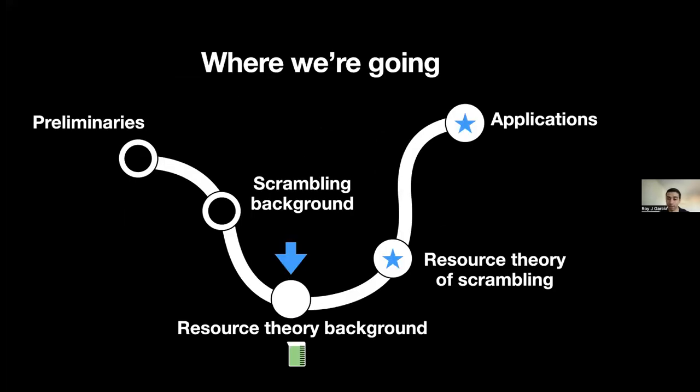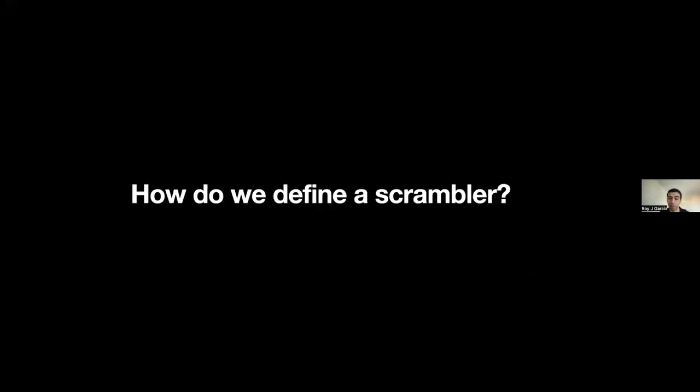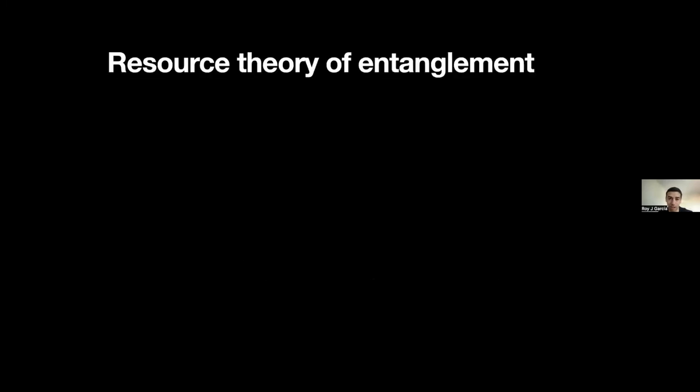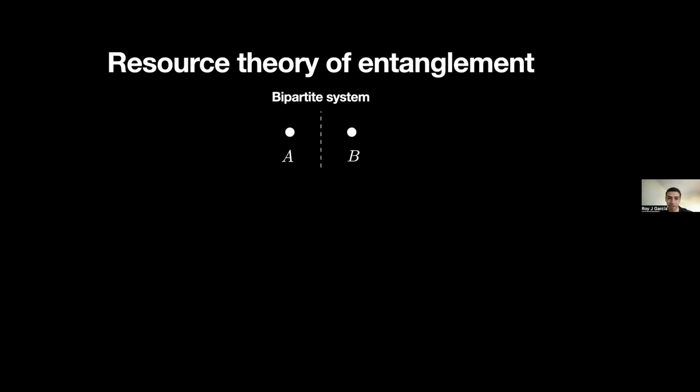Now I'm going to introduce something called resource theory. To motivate this section: how is it that we can define a scrambler? Earlier I gave a description of what a scrambling unitary did, but I didn't give a formal definition. To write down that definition we have to look at resource theory. Before explaining what a resource theory is, I'll give you an example you're already familiar with: the resource theory of entanglement. Consider a bipartite system with qubit A on the left and qubit B on the right.